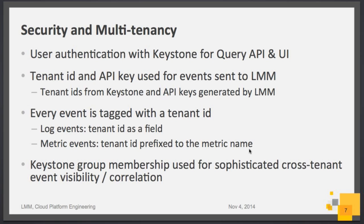The service uses Keystone for user authentication. As you saw, OpenStack is our foundation IaaS platform, and we use Keystone to authenticate across the stack and to access this service too. Every tenant sending logs or metric events gets a tenant ID from Keystone and uses that to generate an API key. Both together are used to authenticate events sent to LMM, and every event is tagged with the tenant ID. You can think of the system as having separate buckets for each tenant, with all queries restricted to the buckets they have access to. We use Keystone groups to facilitate cross-stack and cross-tenant correlation.